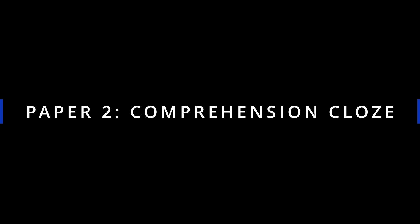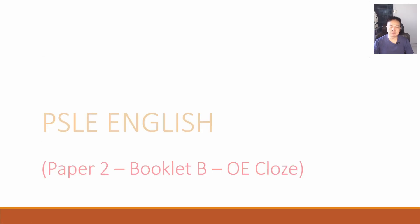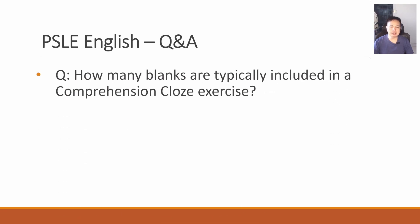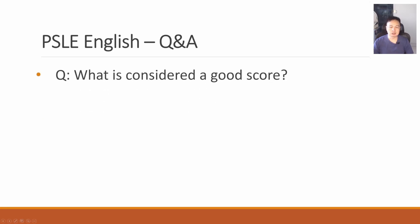Next, Booklet B open-ended cloze. This is a very interesting exercise. Usually there are 15 blanks in the comprehension cloze exercise, worth a total of 15 marks. For the strongest students, a good rule of thumb is to score at least 11 or 12 out of 15. If you're failing this exercise, you really need to practice your reading and comprehension. Students who are weak in vocab will also suffer here because they do not know the words that are supposed to go into the sentences.